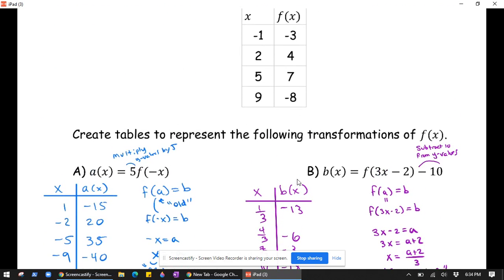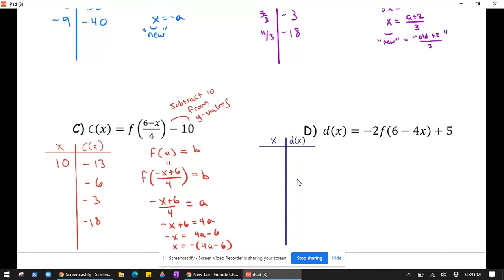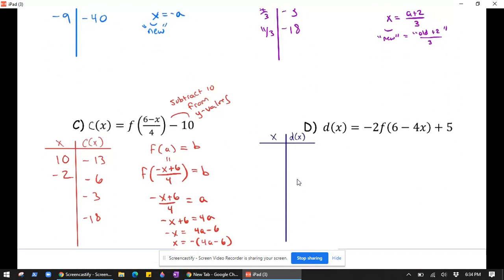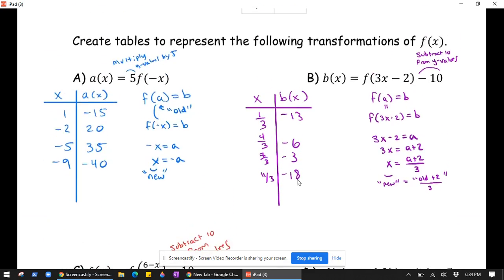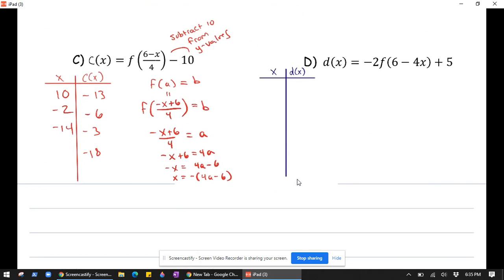4 times 2 is 8, 8 minus 6 is 2, 2 times negative 1 is negative 2. 4 times 5 is 20, 20 minus 6 is 14, times negative 1 is negative 14. And then the last one is 4 times 9 is 36, 36 minus 6 is 30, times negative 1 is negative 30.